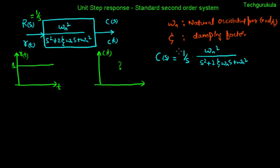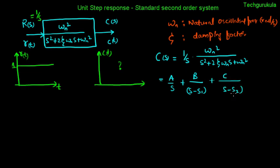Before taking the inverse Laplace, we need to perform partial fractions. We write c(s) as A over s, plus B over (s minus s1), plus C over (s minus s2), where s1 and s2 are the roots of the denominator polynomial and A, B, C are the partial fraction constants. We will find these constants using the partial fractions method.